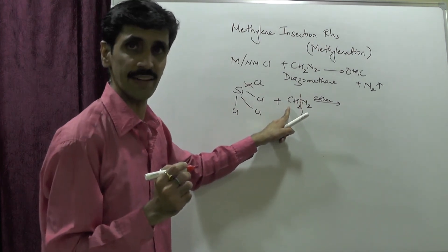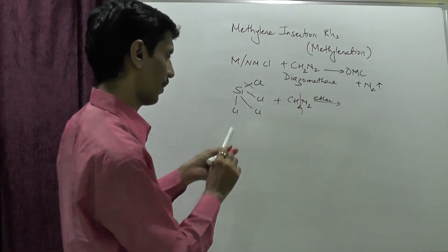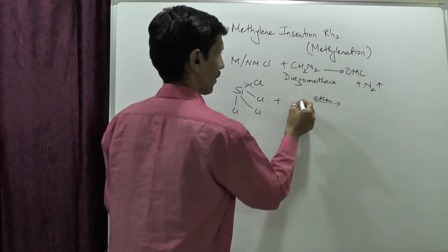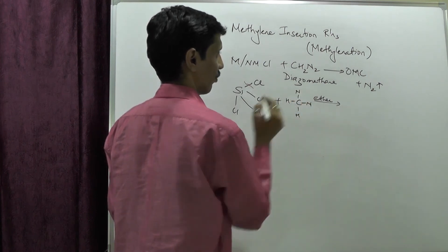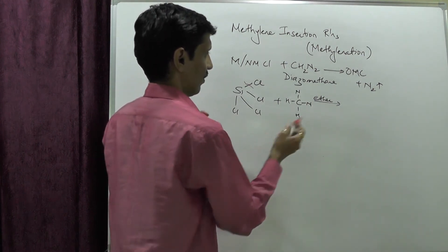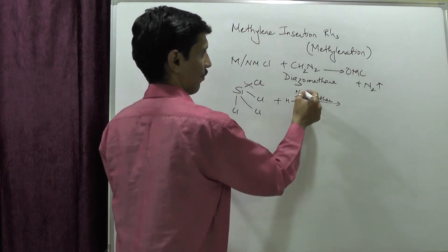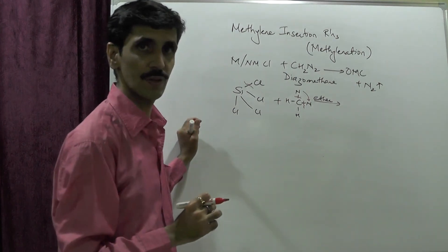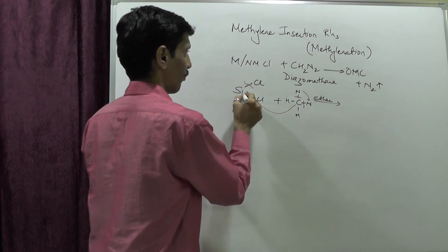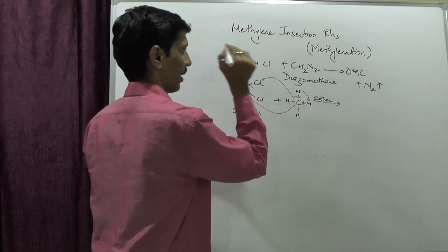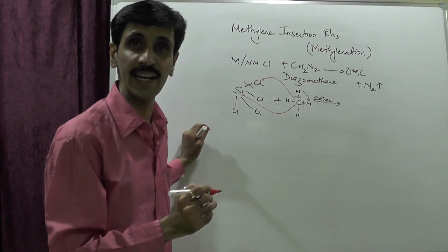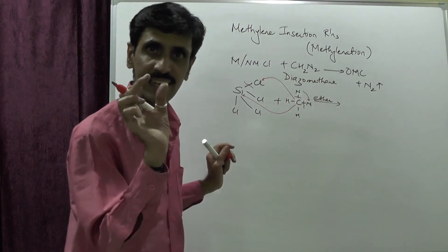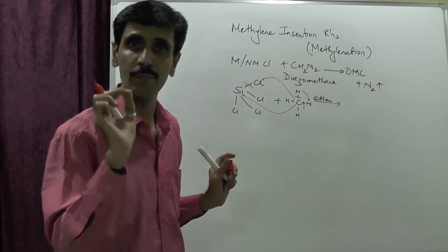Carbon forms one bond with silicon and another bond with chlorine, while the silicon-chlorine bond breaks. This is the insertion reaction — the CH2 group, called the methylene group, gets inserted between Si and Cl. The two nitrogens are knocked out and the product is SiCl3CH2Cl plus N2 gas. Carbon is bonded to silicon, whose electronegativity is less than that of carbon, so this is considered an organometallic compound.